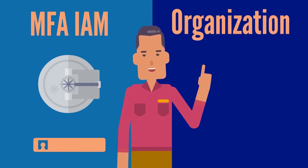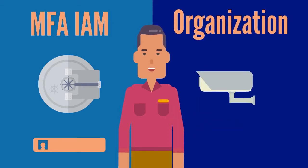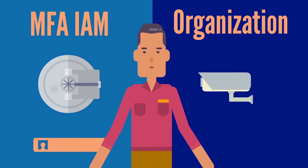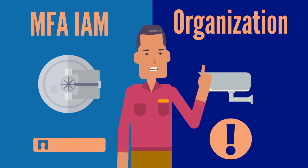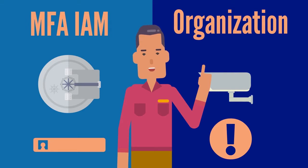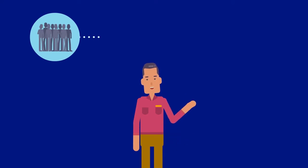An organization's security posture can be optimized by controlling administrative access granted to users, which will reduce security risks. A reduction in attack surface area will control when users can lower access levels by conducting tasks within EC2. The number of root users can be limited by using strong policies and adding limitations on what IAM can do.